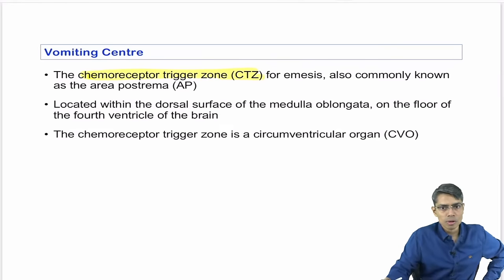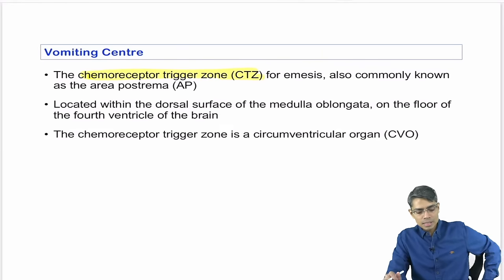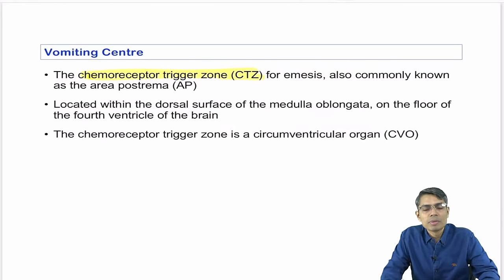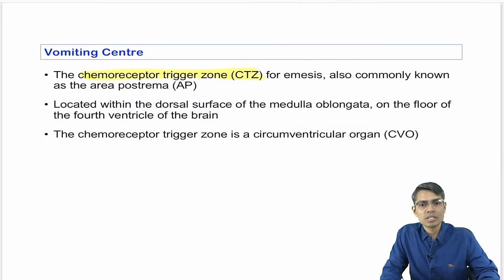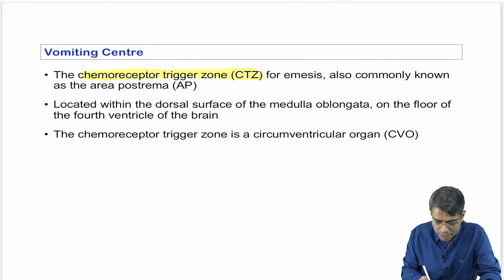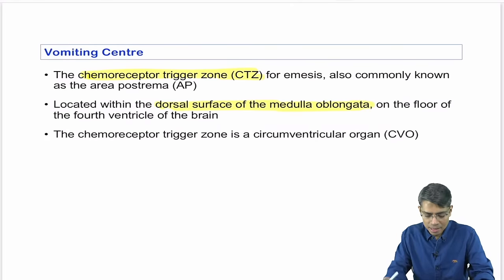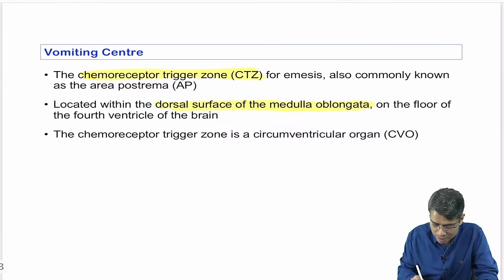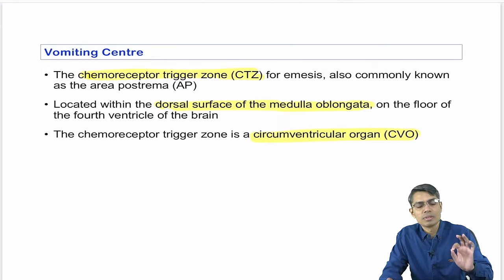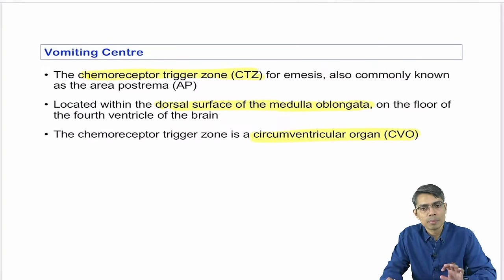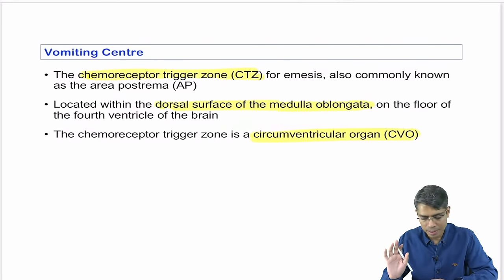Area postrema, also known as the chemoreceptor trigger zone (CTZ), is located on the dorsal surface of the medulla oblongata and is a circumventricular organ. Remember these three facts about area postrema.